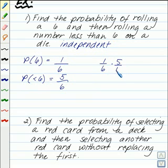So, 1/6 times 5/6 is 5 over 36. So, there's a combined probability of first rolling a 6 and then a number less than 6. It's 5 out of 36.